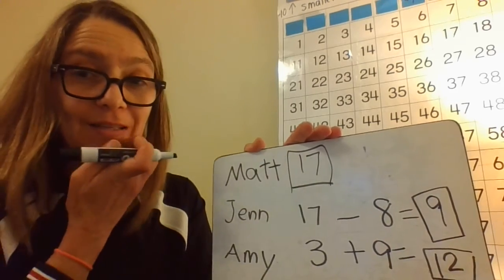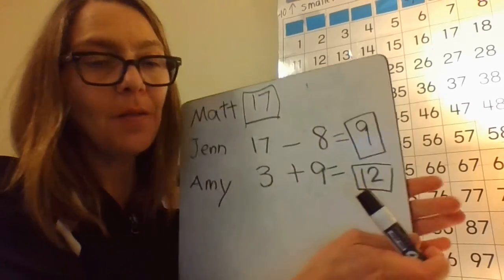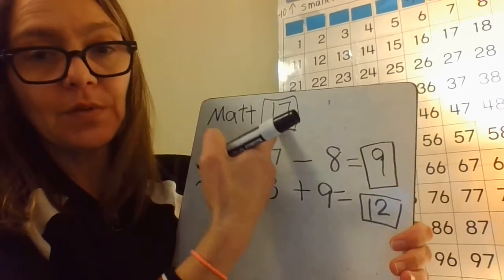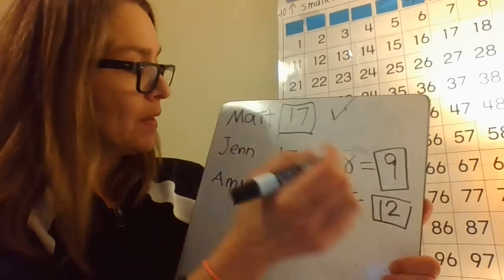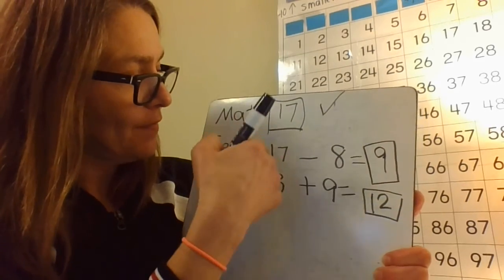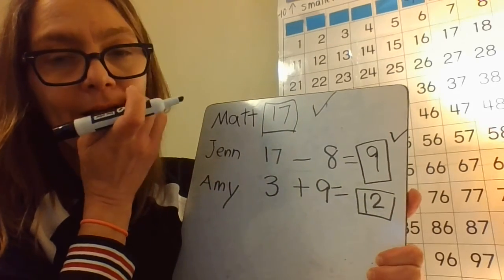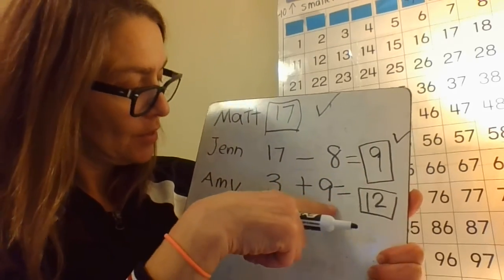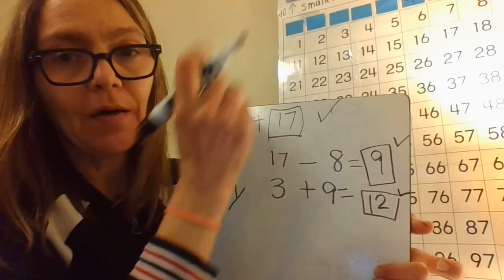So to answer the big question — how many tickets did each person sell — Matt sold 17, which was information provided. I used that to find that Jen sold 9. Then I used Jen's total to find out how many Amy sold. Amy sold 12 tickets.